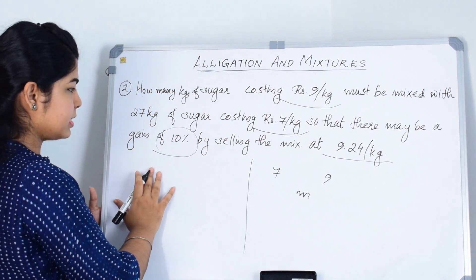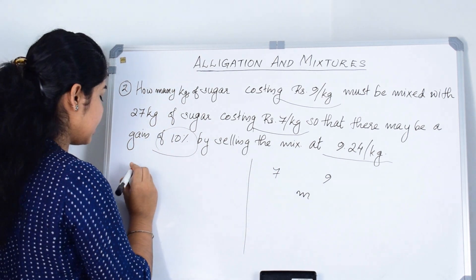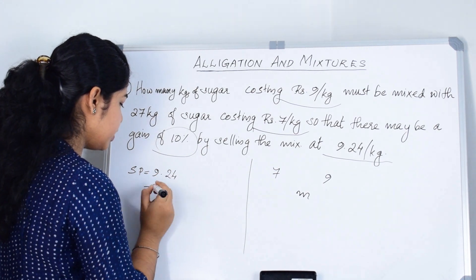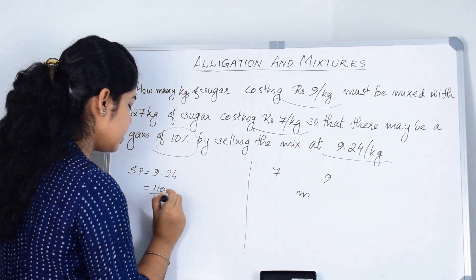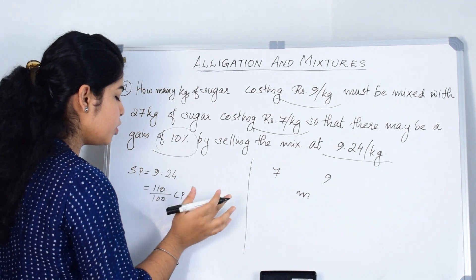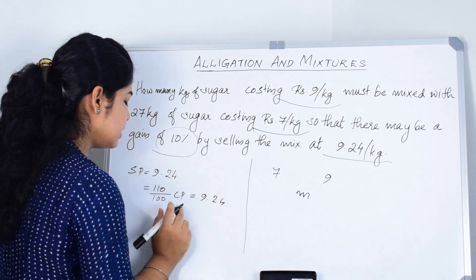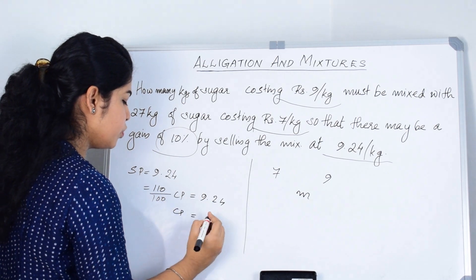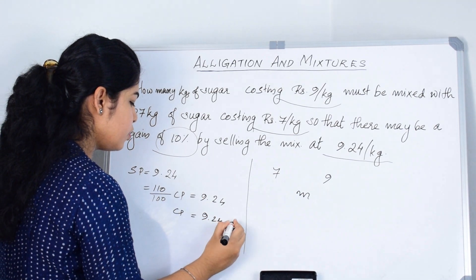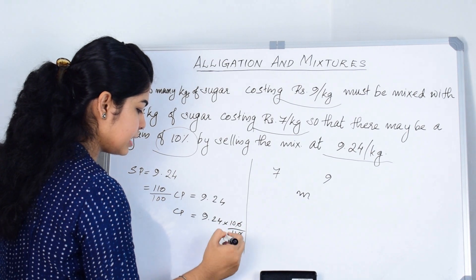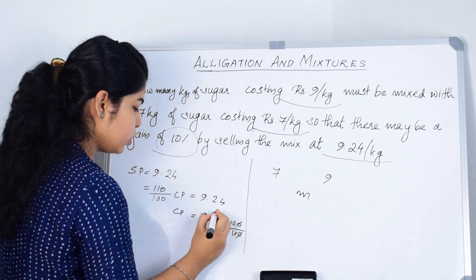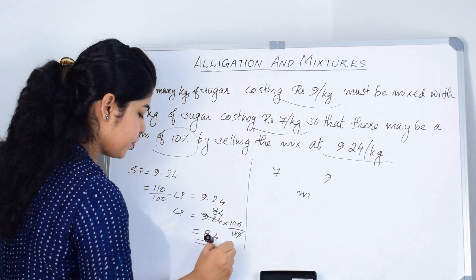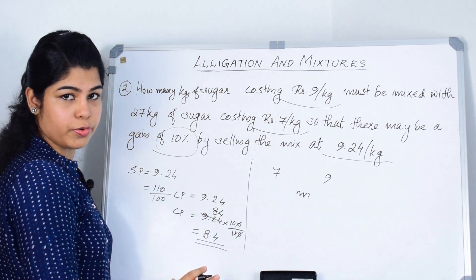The selling price equals 9.24, which equals 110% of CP. So CP equals 9.24 into 100 by 110. By cancelling by 11, we get 8.4. Our cost price is 8.4.